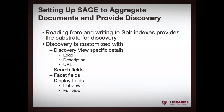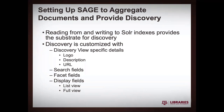Now I'm going to talk about how you actually set up SAGE to do the aggregation and provide discovery to patrons. The Solr index is what provides that substrate for discovery, and the discovery itself is customized in a few different ways. There are specific details for any particular discovery view where you'd like to set things like a logo, description, and general information. We also have it set up where you can customize your search fields, your facet fields, and the fields you want to display on items — either in the list context or in the single item view context.